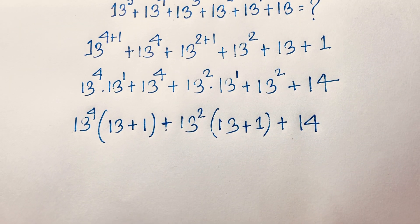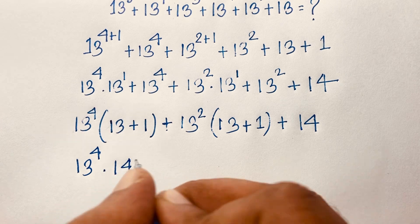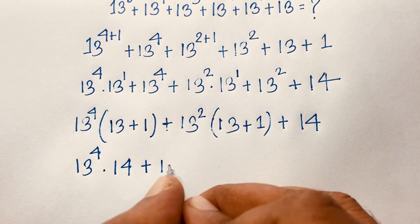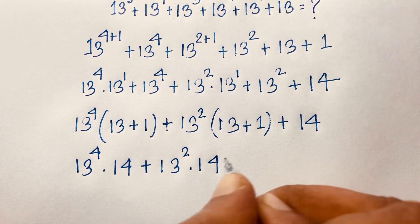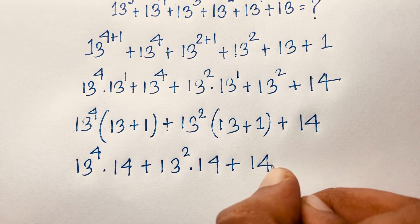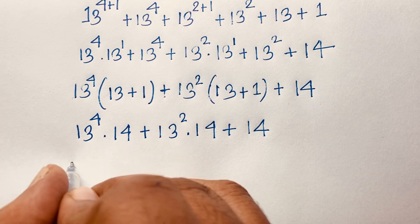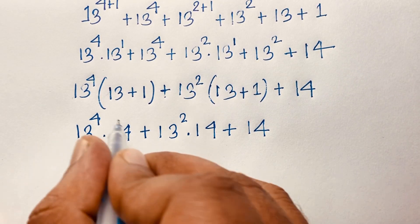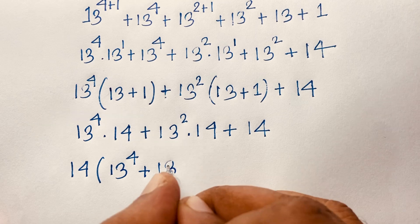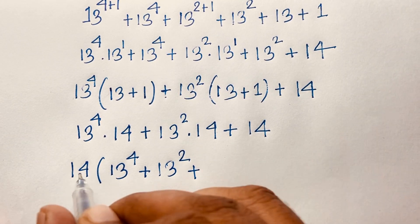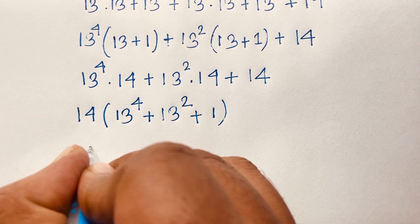Now you can see 13 power 4 times (13 plus 1) equals 14, plus 13 power 2 times (13 plus 1), which is also 14, plus 14. At this moment 14 is a common factor across all three terms. Factoring out 14 gives 14 times (13 power 4 plus 13 power 2 plus 1).